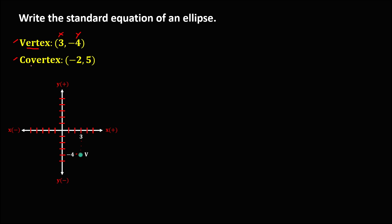For the co-vertex, x is negative 2 and y is positive 5. We connect and plot this point as the co-vertex.